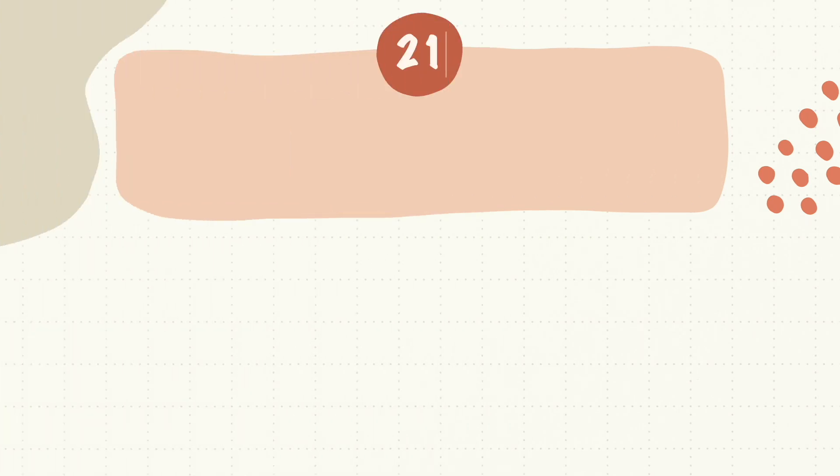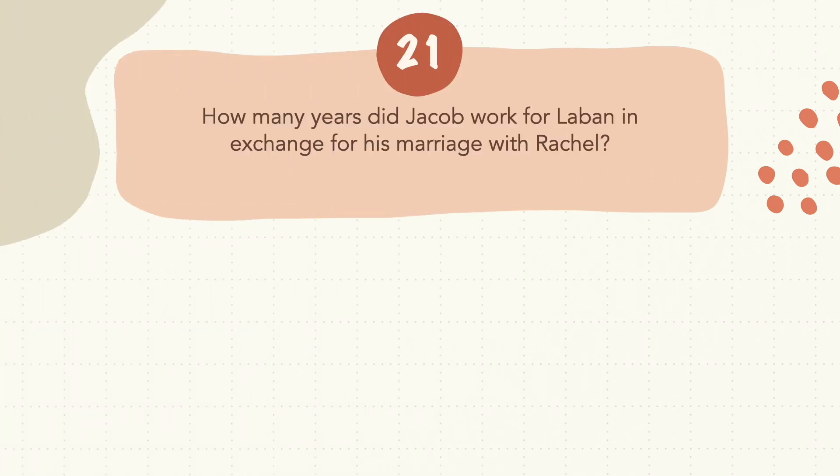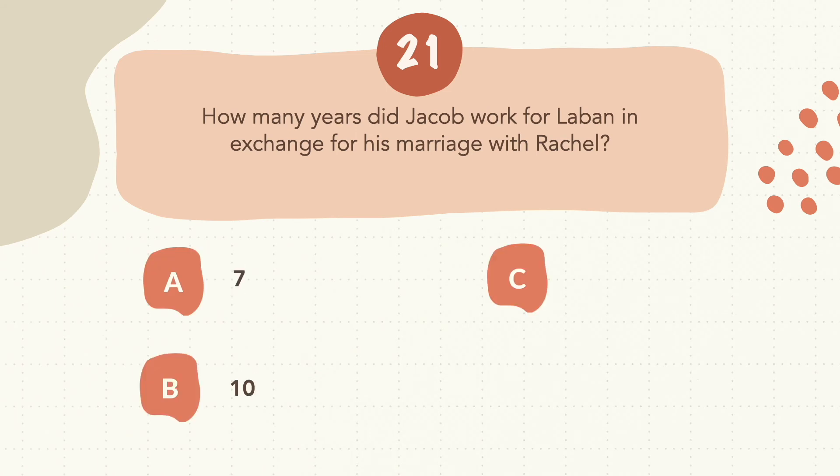Question 21: How many years did Jacob work for Laban in exchange for his marriage with Rachel?